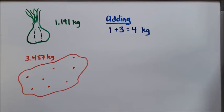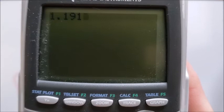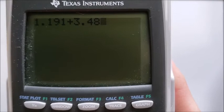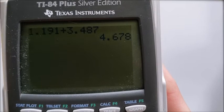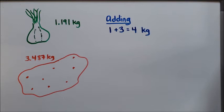Now if we wanted to check this we could grab a calculator and we could show that this is close to the correct answer. My calculator is kind of fancy but we're going to take a look at it here. So I have 1.191 and I'm going to add 3.487 and I get an answer of 4.678. When I have that answer 4.678, that looks pretty close to my four kilograms and so I would say that I'm on the right track when it comes to estimating an answer.